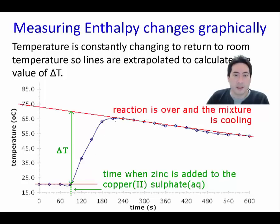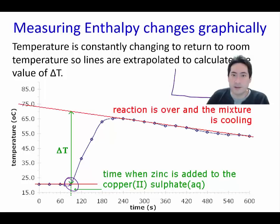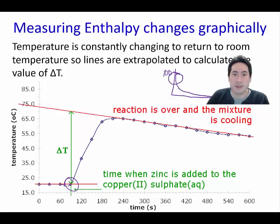When you do these experiments in class, your graph will show a curve because the substance starts cooling immediately after the reaction. At high temperatures water cools very fast, but as it approaches room temperature it cools more slowly — this is the cooling curve of water.